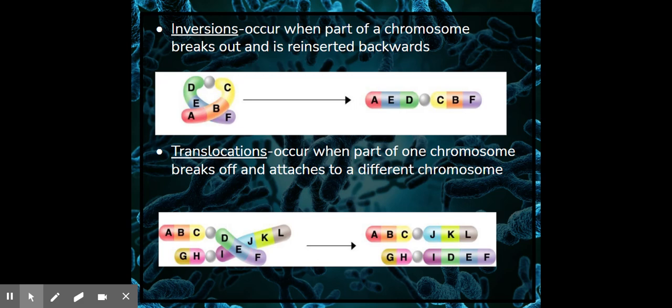Inversions are when it breaks off and reattaches backwards. For instance, instead of being A, B, C, D, E, F, it's A, E, D, C, D, F. So that would be an inversion.